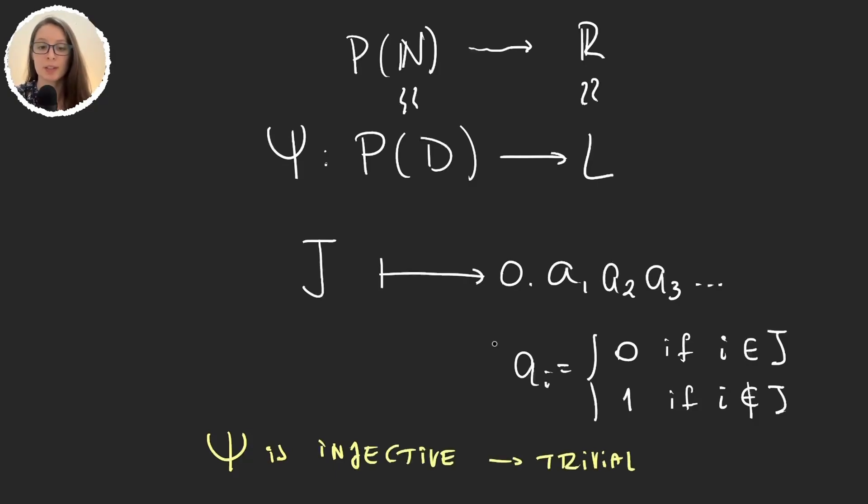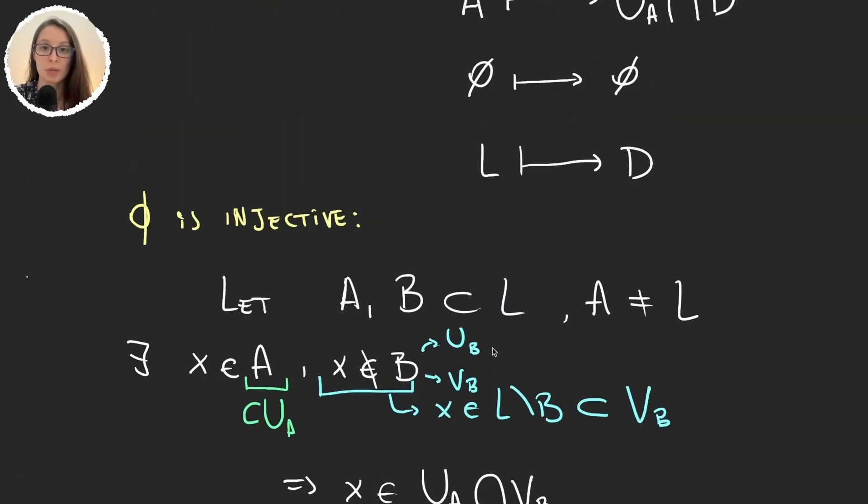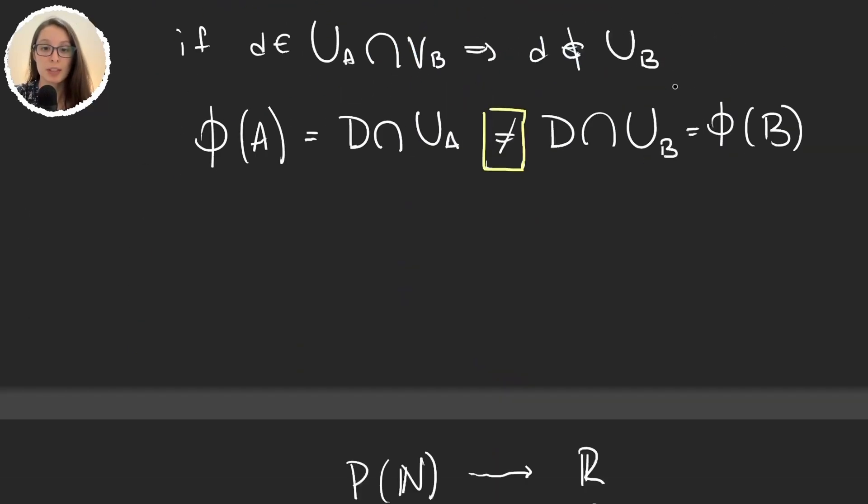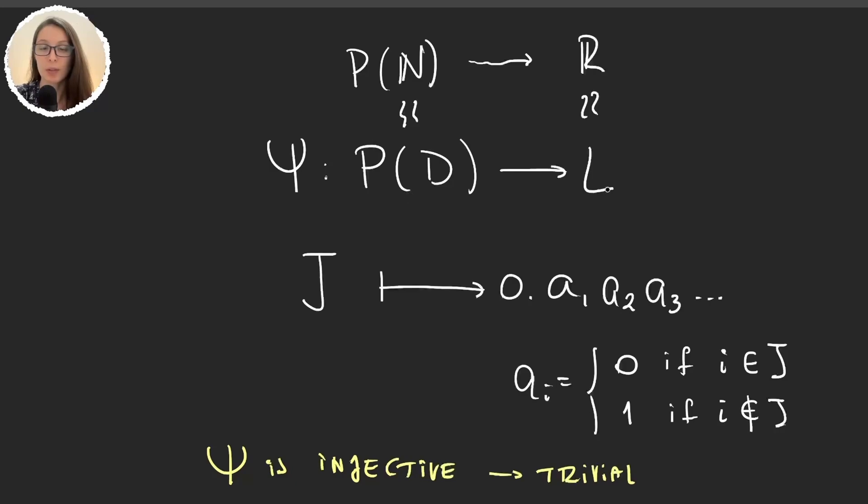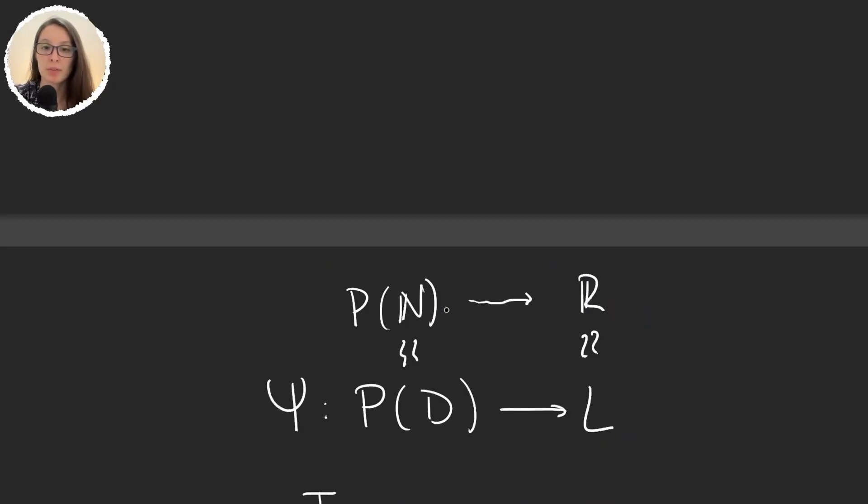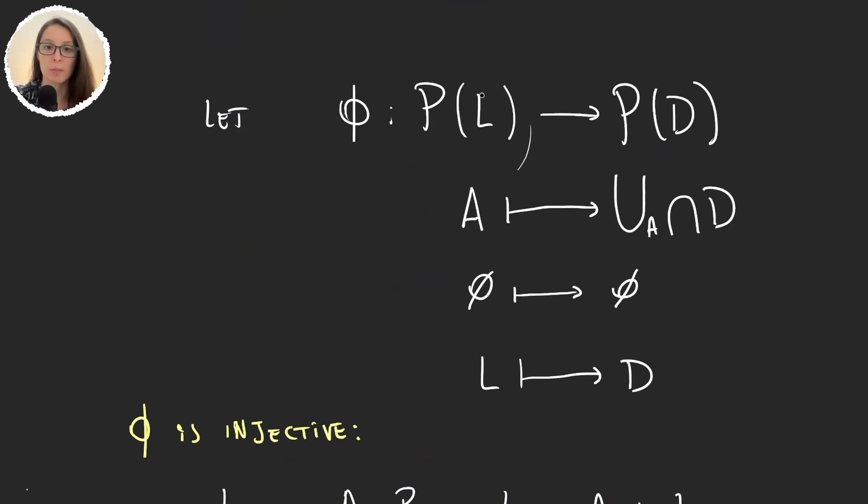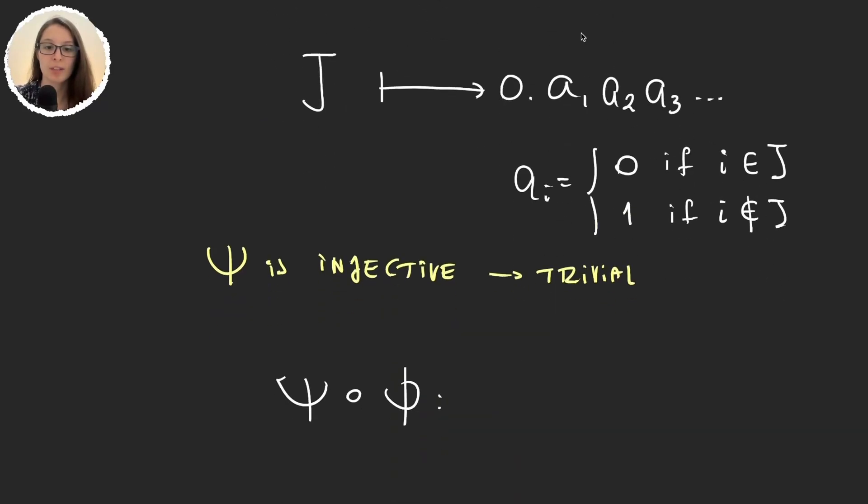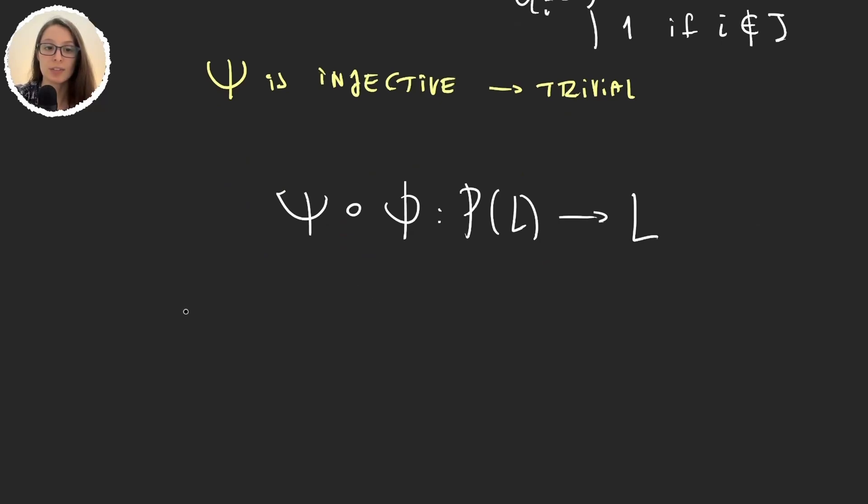So now we have two injective functions. Phi goes from parts of L to parts of D and psi from parts of D onto L. And so we can compose these two functions, psi composed with phi. This could be a function from, well first phi I said was from parts of L, and then psi went to L. So from parts of L onto L. Because these are two injective functions, this function is injective.